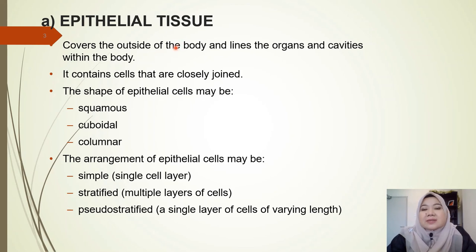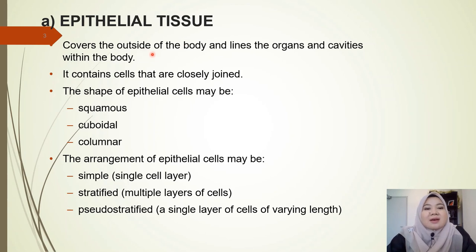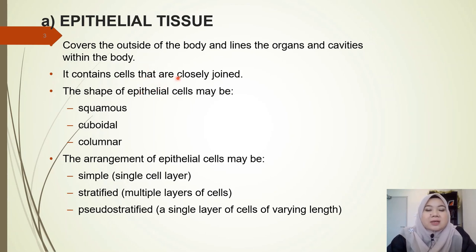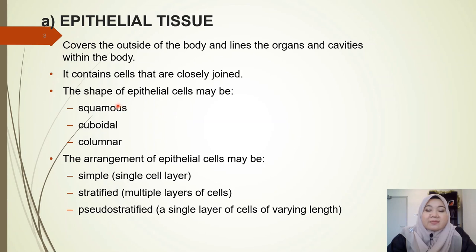We're going to look at the first category of animal tissue, which is the epithelial tissue. It covers the outside of the body and lines the organs and cavities within our body, and it also contains cells that are closely joined together. You can identify epithelial cells by looking at two characteristics: the first is the shape, and the second is the arrangement of the cells.